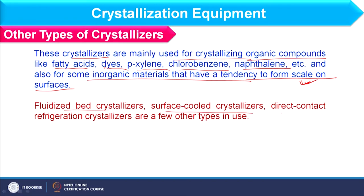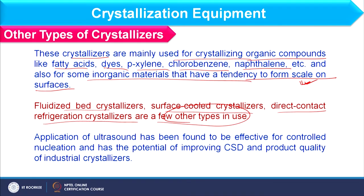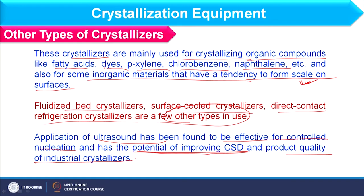Fluidized bed crystallizers, surface cool crystallizers, and direct contact refrigeration crystallizers are other types used in industry. Additionally, application of ultrasound has been found effective for controlled nucleation and has the potential of improving crystal size distribution and product quality in industrial crystallizers, because ultrasound creates cracks in the crystal. Impurities associated with the crystal can also be removed through ultrasound action, improving product quality.